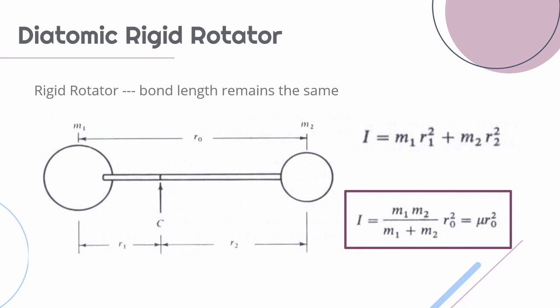We will now consider a diatomic rigid rotator. A rigid rotator is one in which the bond length remains the same. After calculations we find that the moment of inertia of a diatomic molecule is given by μ times R0 squared, where μ is the reduced mass given by M1 M2 divided by M1 plus M2, where M1 and M2 are the masses of the atoms in a molecule. R0 is the bond length, the distance between the atoms in the molecule.